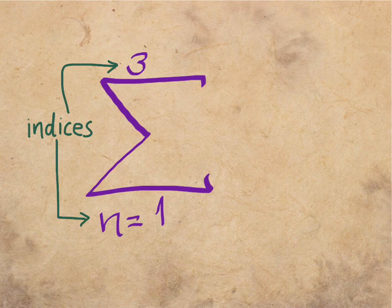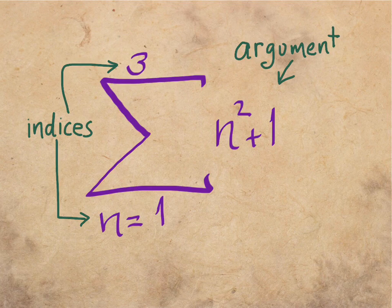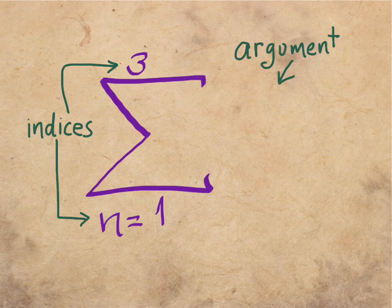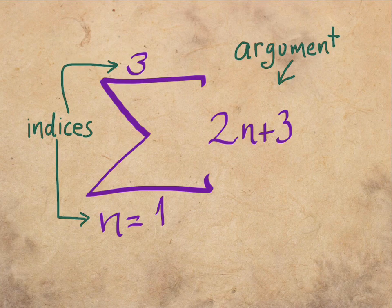This string isn't going to be very long, only from one to three. And then along with that, you'll see some kind of an expression outside the sigma letter there. That's sometimes called the argument or the expression. And it might be n squared plus one, it might be n plus one over n, or some other kind of thing, like two n plus three — just some kind of little mathematical expression. And that describes how the terms are written out for the sum.